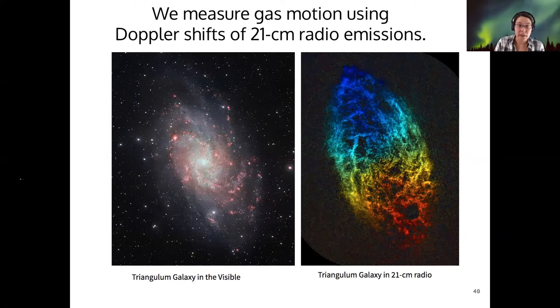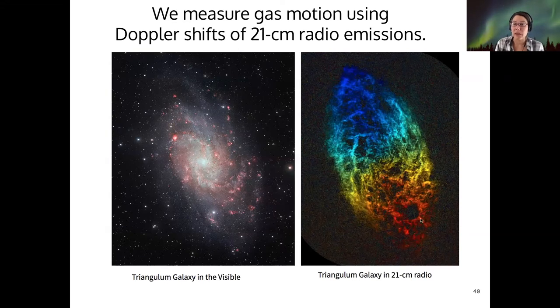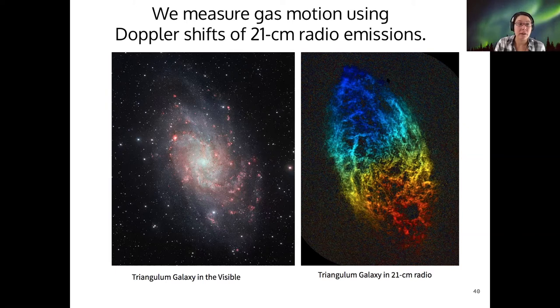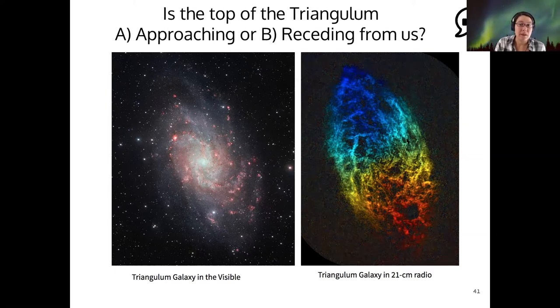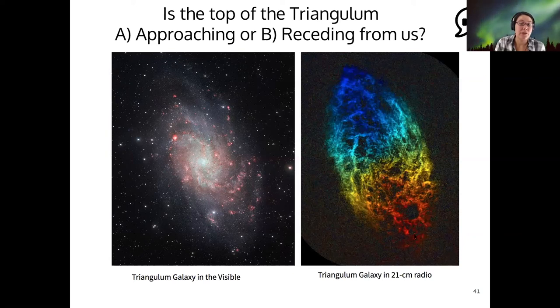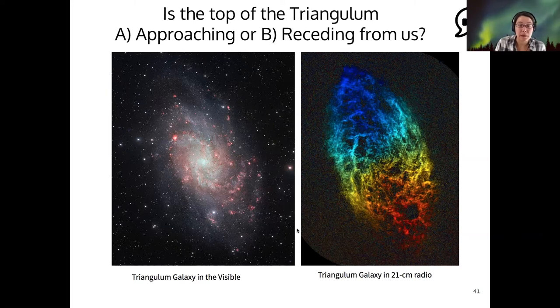So for example, here's the Triangulum Galaxy again in the visible. And now this particular image is 21 centimeter radio showing the red shift and the blue shift of different parts of the galaxy. So my question for you is based on how the red shift and blue shift are located on the Triangulum. Is the top of it approaching us or receding from us?